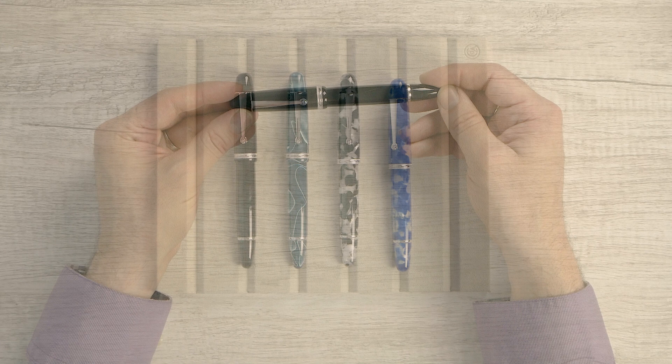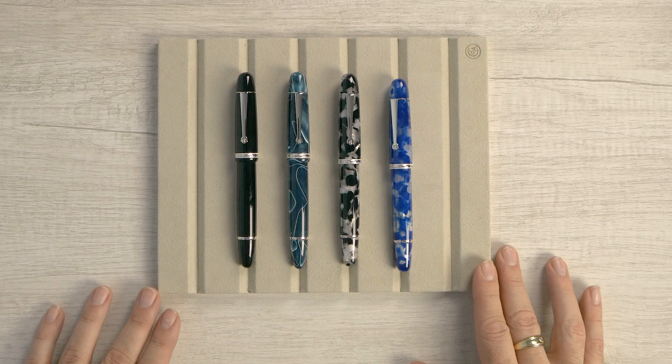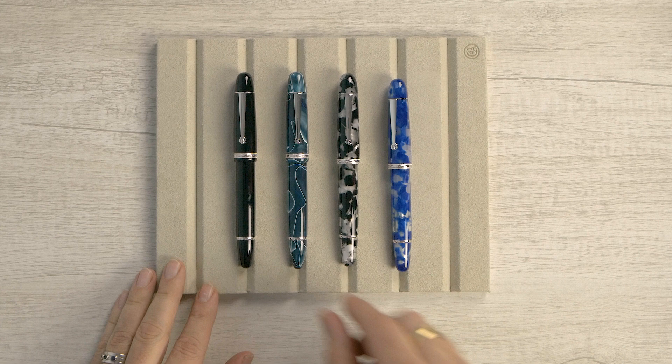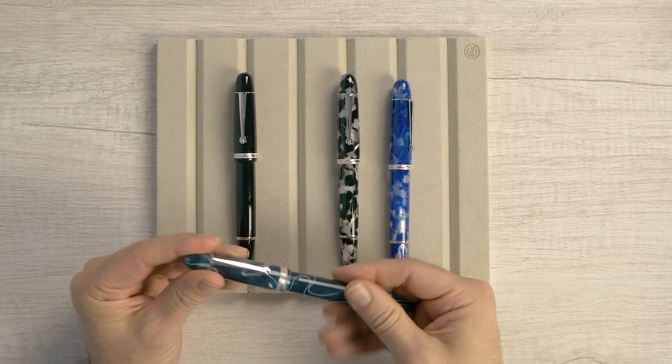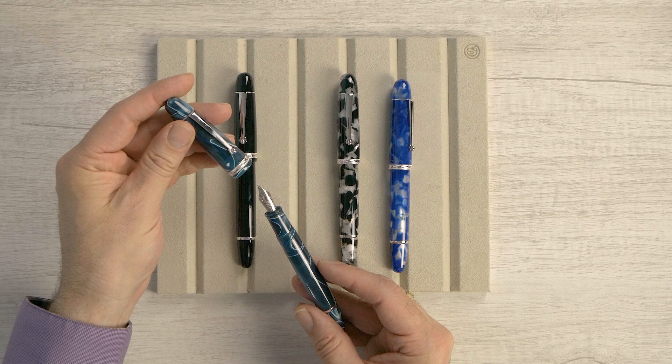Okay, so there are basically two series with the Penlux Masterpiece Grande. We have the first series here. We've already seen the black. The next one is quite lovely, the blue swirl. Nice, nice material. And you'll see they color match the section to the rest of the body, which is a nice touch.